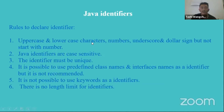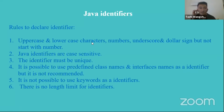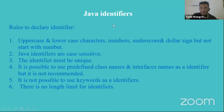For your information, we have talked about keywords in Java. We have 50 keywords and including three constants, we have 53 Java reserved keywords. Therefore, these 53 keywords that we discussed earlier cannot be used as identifiers.